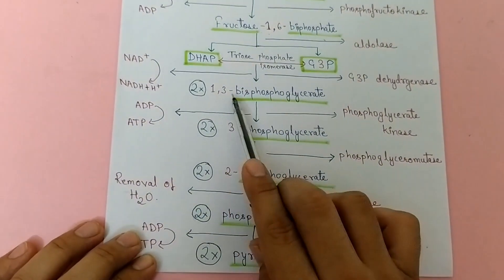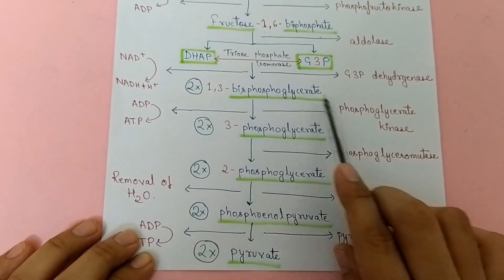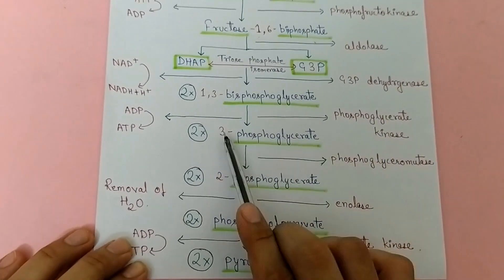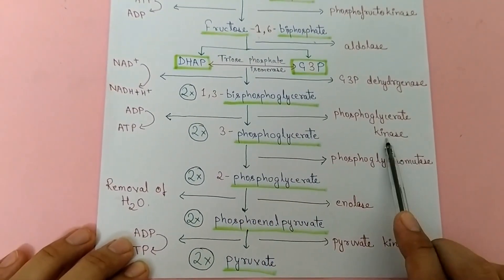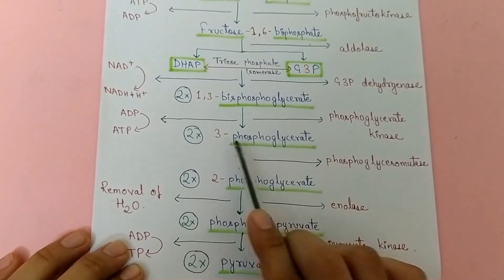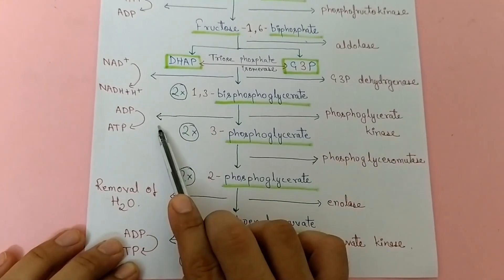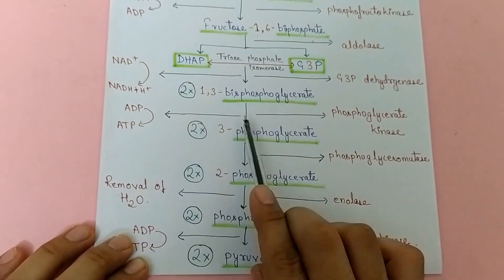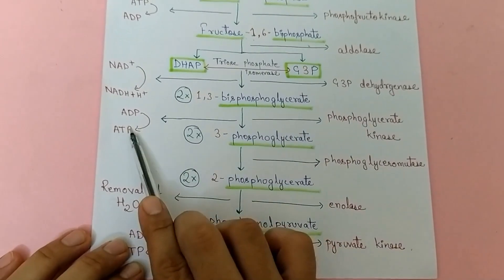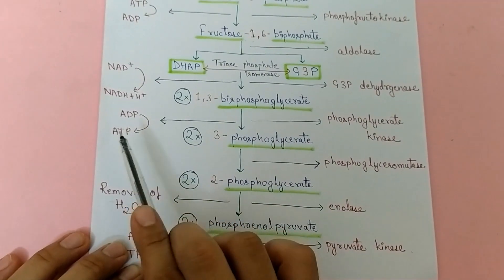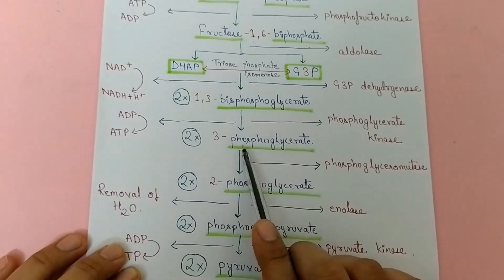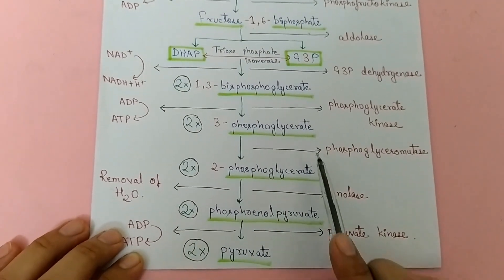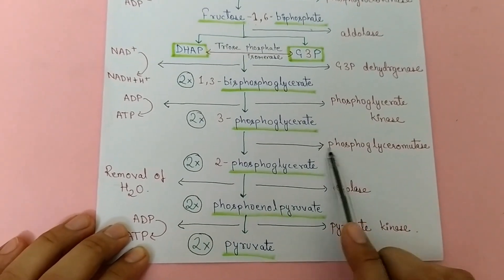Then we convert 1,3-bisphosphoglycerate into 3-phosphoglycerate with the help of enzyme phosphoglycerate kinase. At this step 1 ATP is generated; since this reaction takes place twice, 2 ATP are generated here. Then we convert 3-phosphoglycerate into 2-phosphoglycerate with the help of enzyme phosphoglyceromutase, and this reaction also takes place twice.